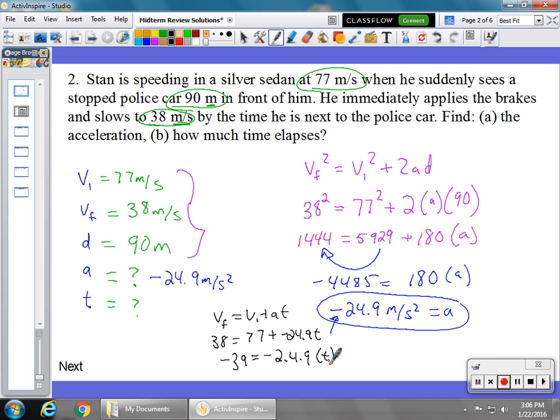So we're going to divide 24.9 into the negative 39. And that's going to give us a positive time of 1.57 seconds. Again, if you're getting a negative number for time, you're definitely doing something wrong in this problem.